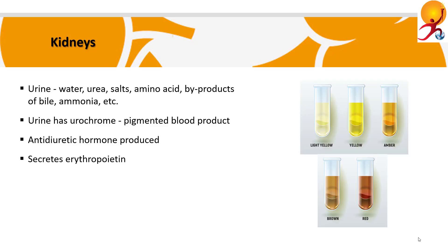Other functions of the kidney also include secretion of the hormone erythropoietin, which stimulates and controls red blood cell production. In addition, the kidneys help regulate the acid-base balance, or the pH, of our blood and body fluids.